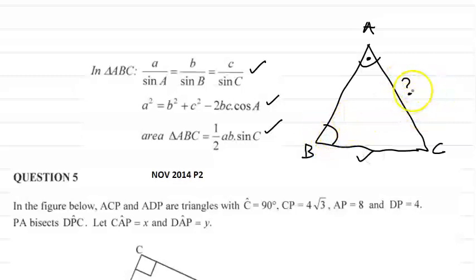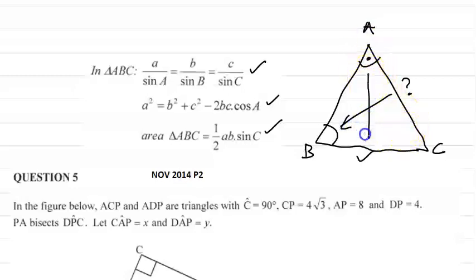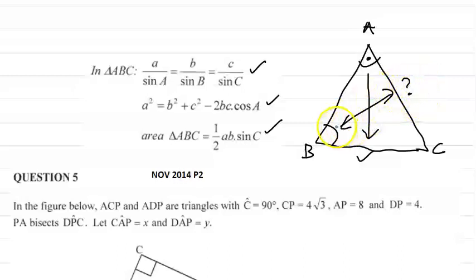One more time: if I'm given an angle and its opposite side, and if I'm given another angle, then I can find the side opposite that angle. If I'm given the side, then I can find the angle opposite that side.